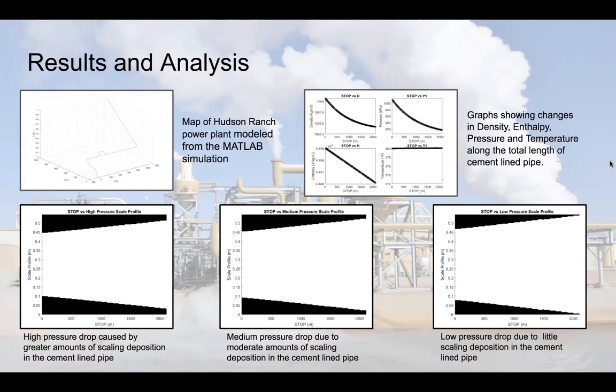Utilizing MATLAB, we designed a code to factor in pressure drops from friction, minor losses, and varying pipe diameters. An accurate simulation was created to analyze the efficiency of the pipe material and its susceptibility to scale buildup. These results are based on empirical pressure values and pipe path from the Hudson Ranch geothermal power plant in the Salton Sea.